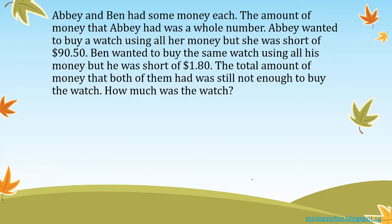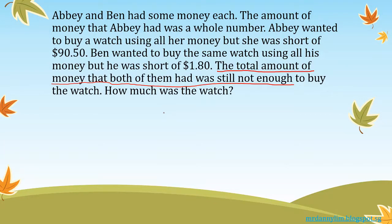We are interested in the total amount of money that both of them have, which was still not enough. That means the watch is one whole bar, and when you add Abby and Ben inside the model it's still not enough — there's still a gap. So I'm going to draw one bar here representing the total cost of the watch as one whole bar.